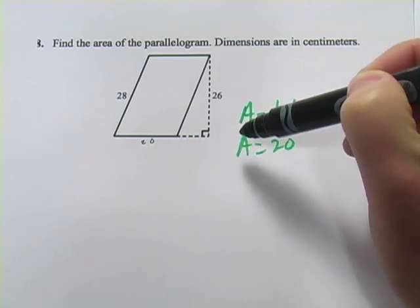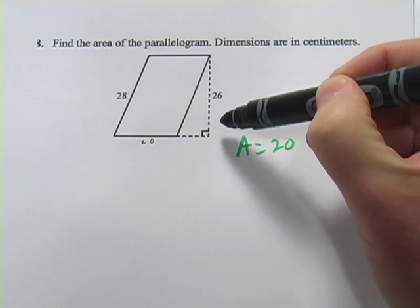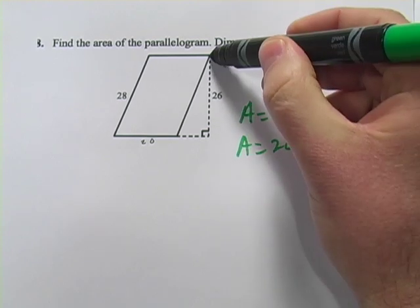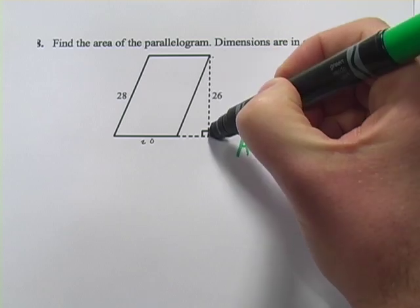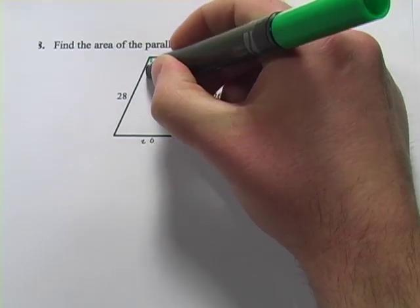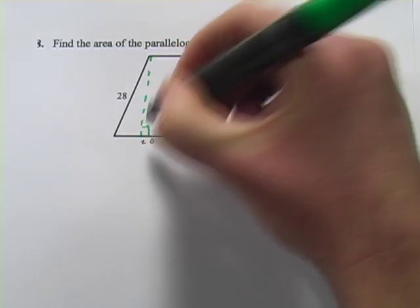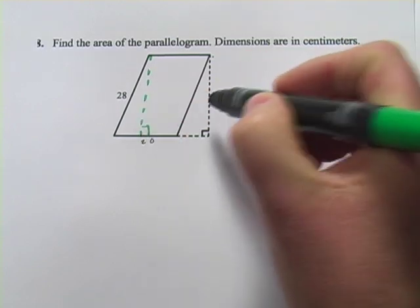This dashed line right here with the 26 on it is the height of this parallelogram. And if you want to convince yourself of that, you could move this thing over and it would fit exactly in there. So those two lines are really the same.